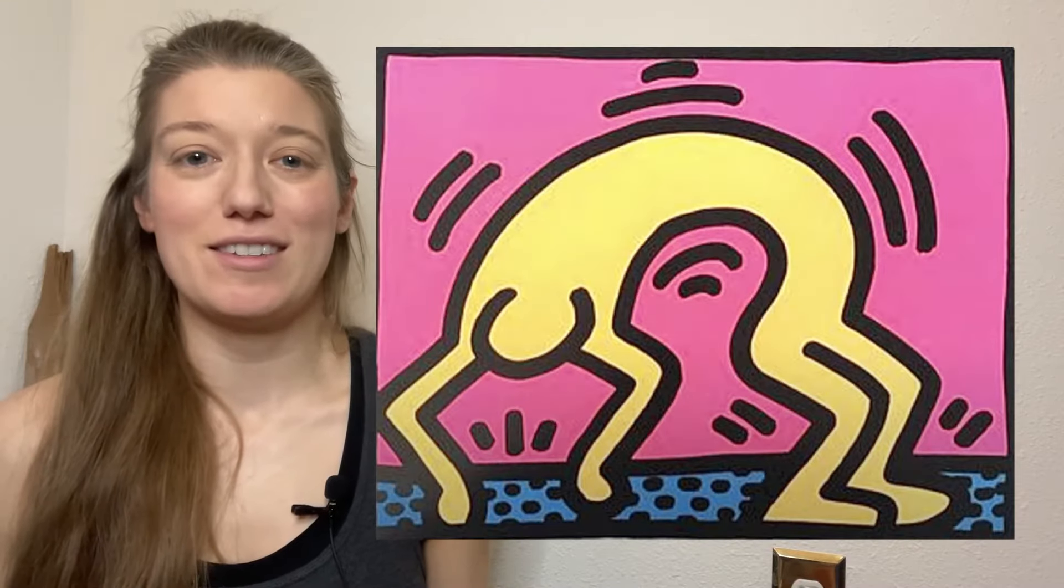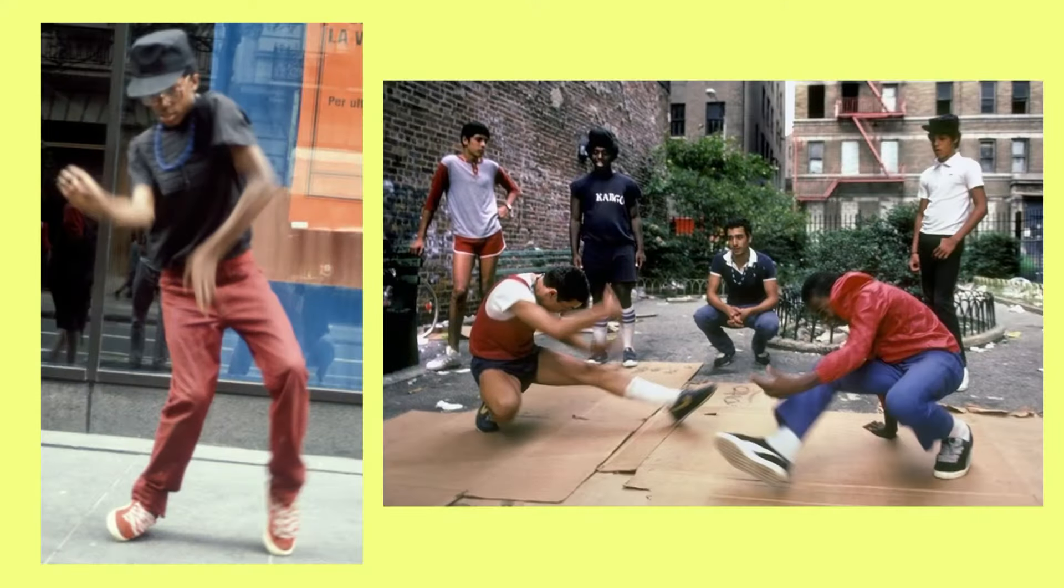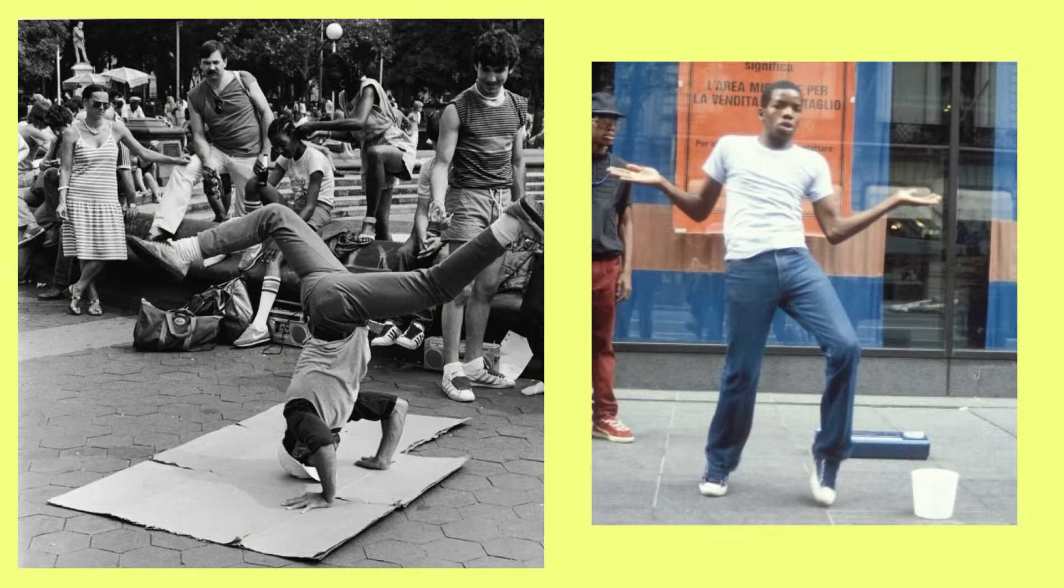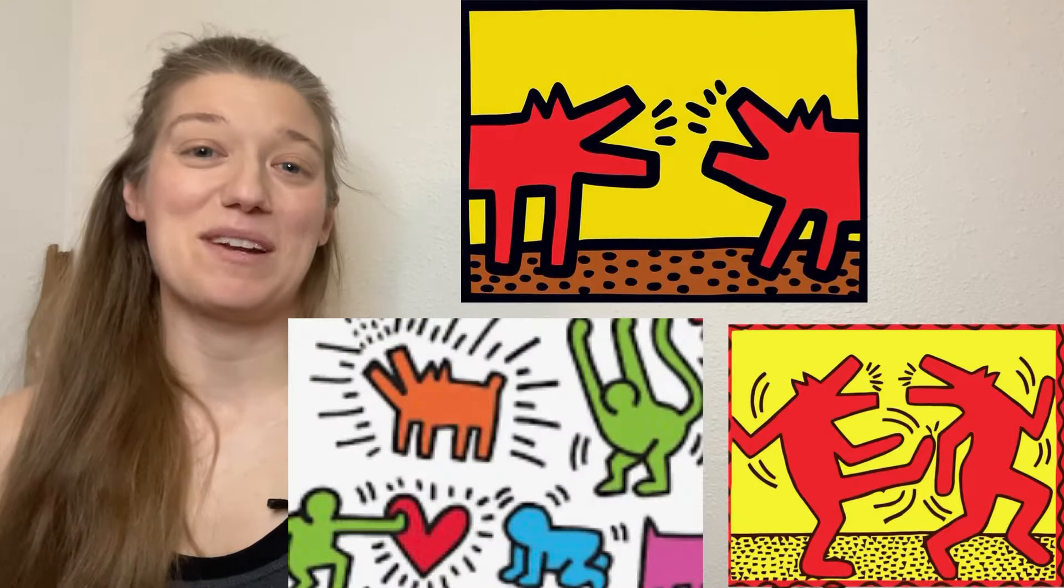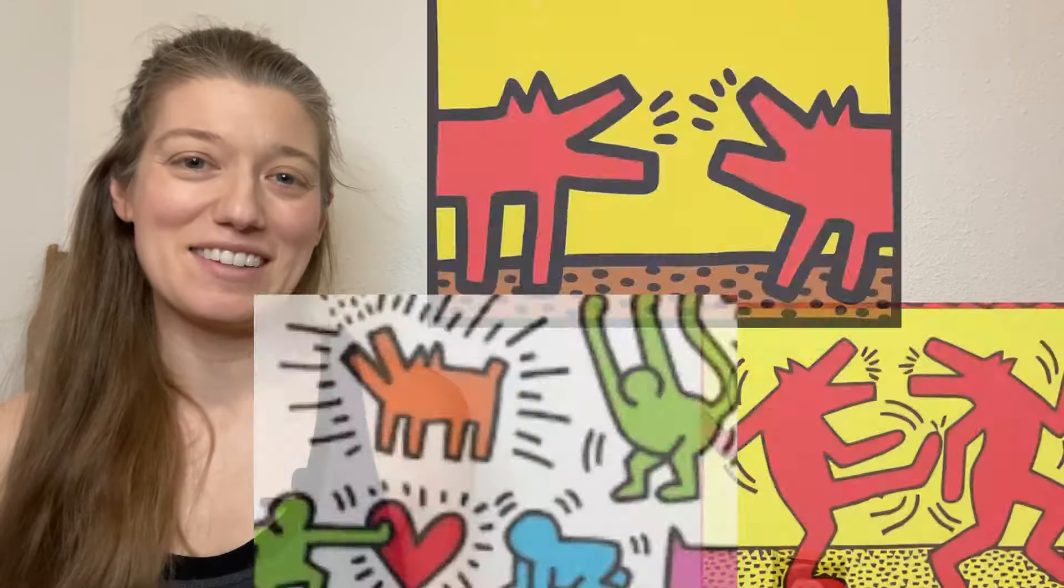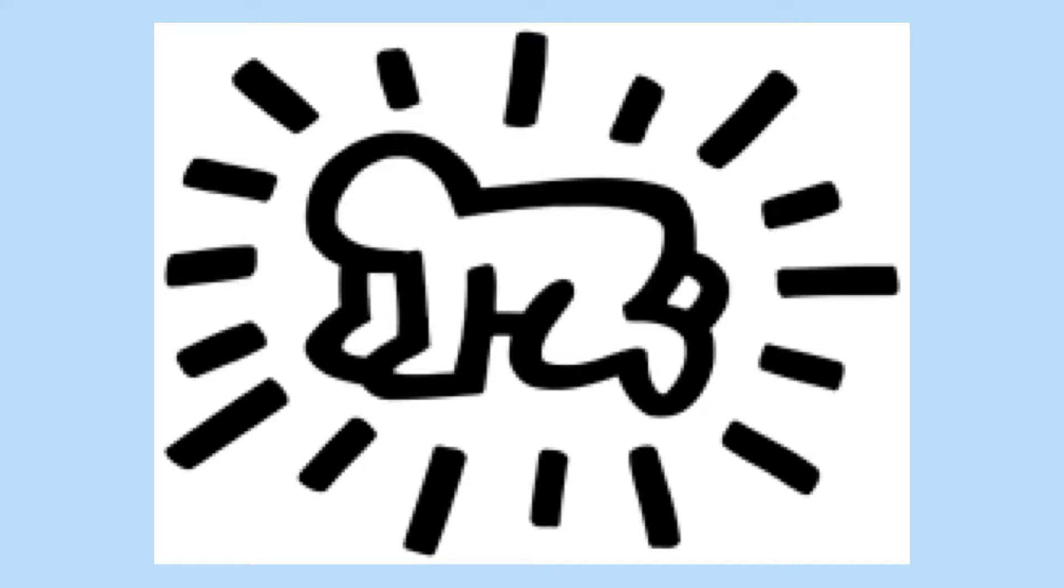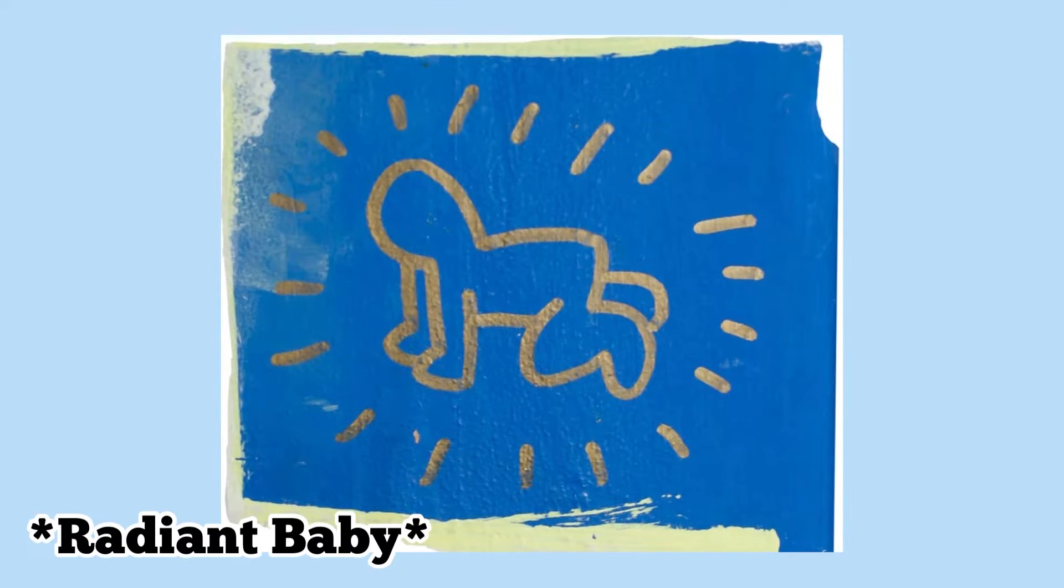Many of his drawings of people are inspired by the break dancers that he often saw dancing in the streets in New York. This dog makes many appearances in his artwork. He's also well known for this image of a baby, which is often called radiant baby.